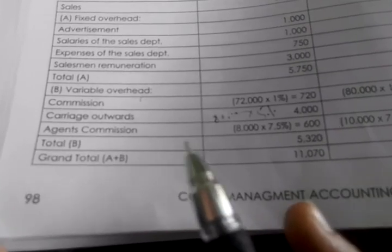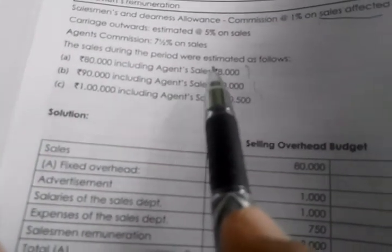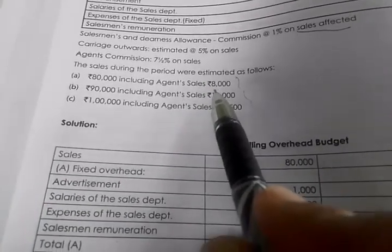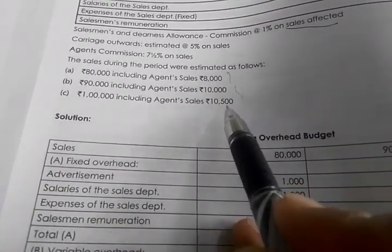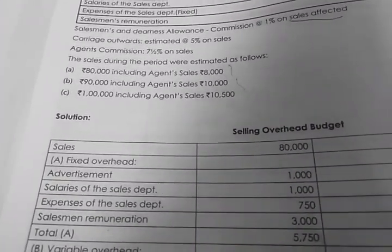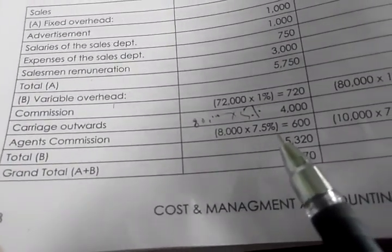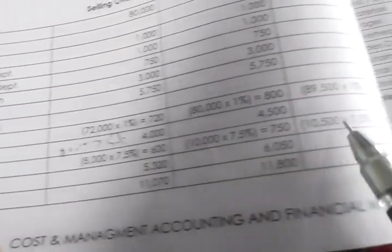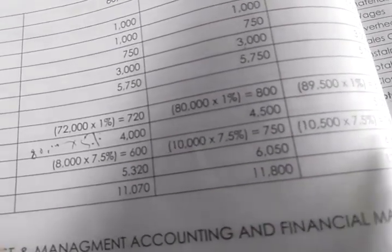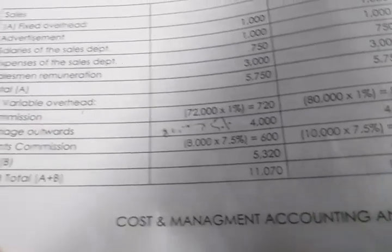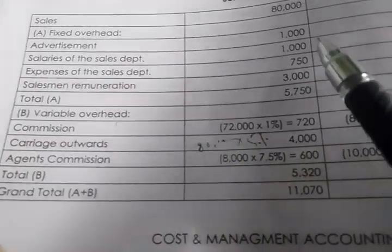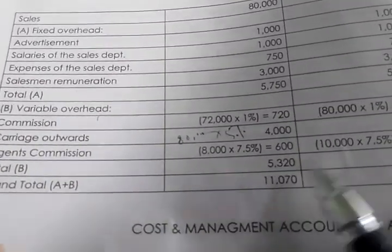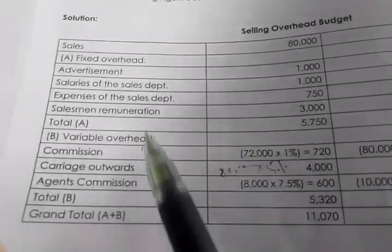Now for agent's commission: the agent sales figures were ₹8,000, ₹10,000, and ₹10,500. Agent commission is 7.5% on those amounts. So: ₹8,000 × 7.5%, ₹10,000 × 7.5%, and ₹10,500 × 7.5%. Calculate these amounts. Then add all variable items together to get Total B, and then add Total A and Total B to get the grand total selling overhead budget.